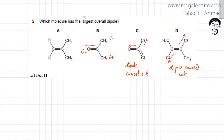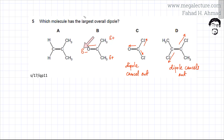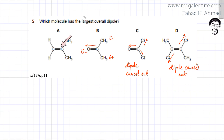Looking back at all the options, there was only one option — option B — which had an overall dipole, where there was one oxygen atom on one side, so all the electrons got pulled toward that side. In options C and D, the dipoles cancel out. In option A, there was no initial dipole because all the atoms were equally electronegative. So the correct answer is option B.